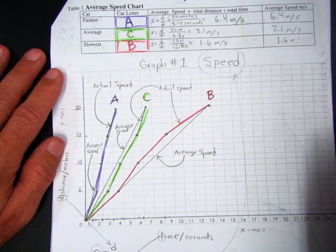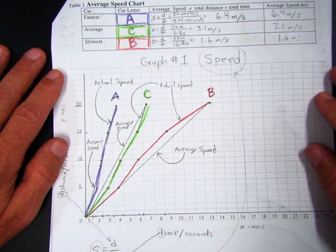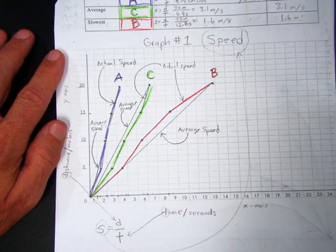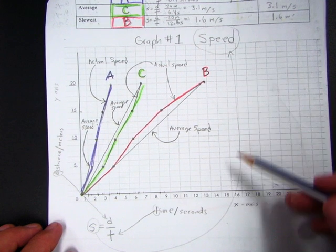I want to talk to you about the difference between a speed graph and an acceleration graph. If you take a look, you always want to read the x and y axis.